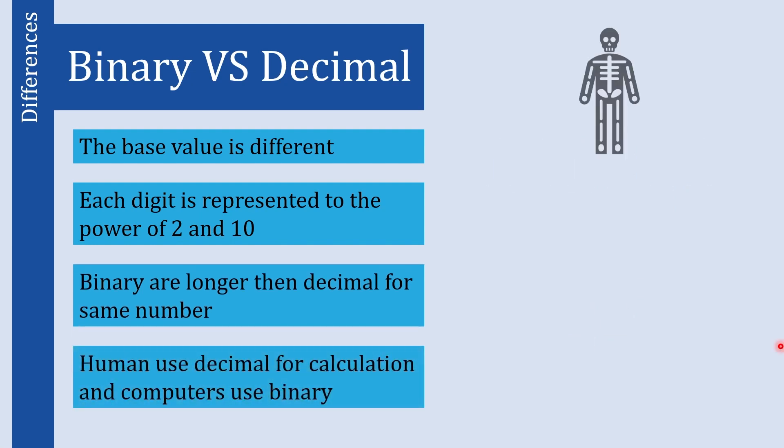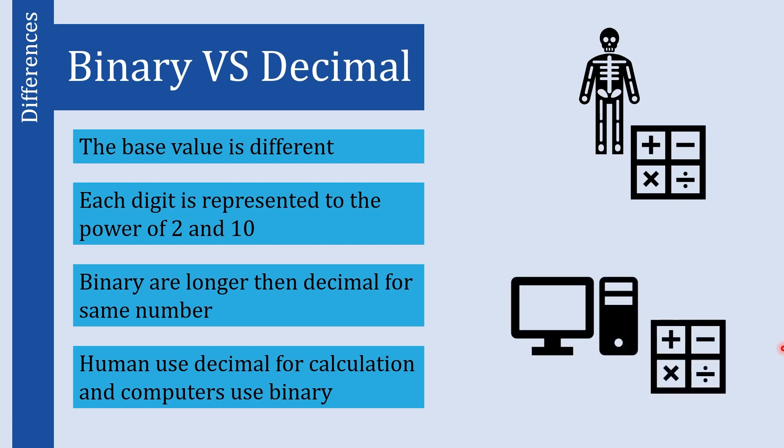The next difference is that decimal numbers are more commonly used in everyday life. Generally, humans use decimal numbers for all arithmetic operations and calculations, whereas binary is used more in computing and digital electronics. In simple terms, computers use the binary number system for all their calculations.